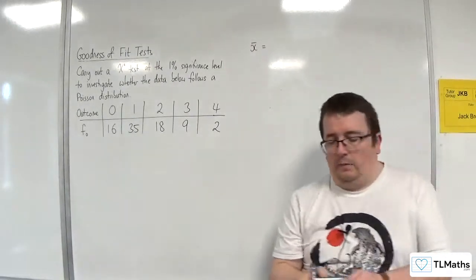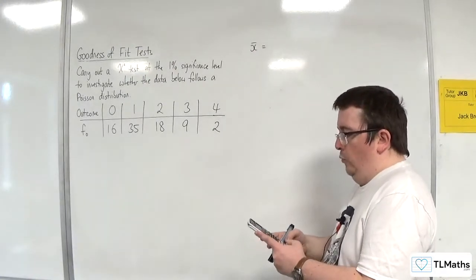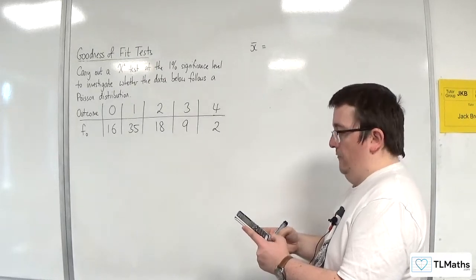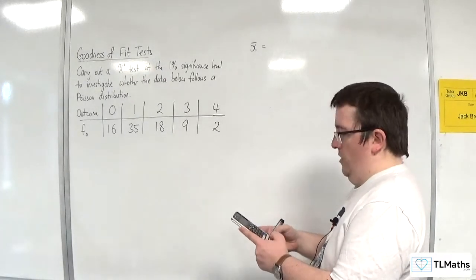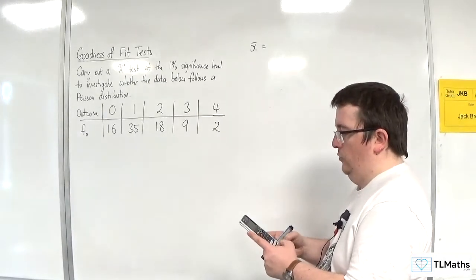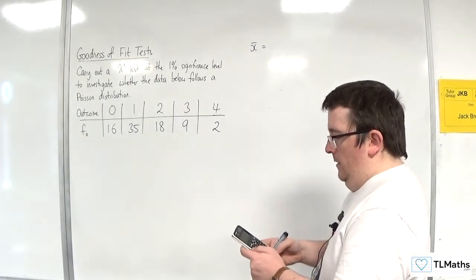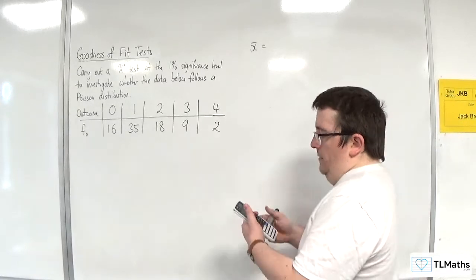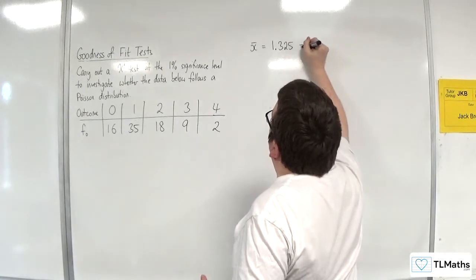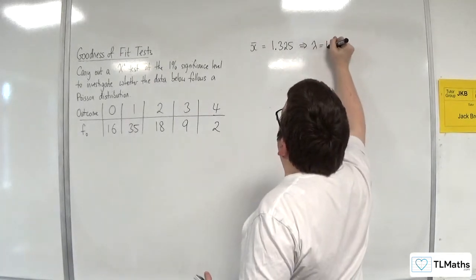So I'm going to go to menu, then number 6, one variable, and I'm going to type the data 0, 1, 2, 3, 4, frequencies 16, 35, 18, 9, and 2. So we should get 1.325. So that is the value of lambda I'm going to be using.